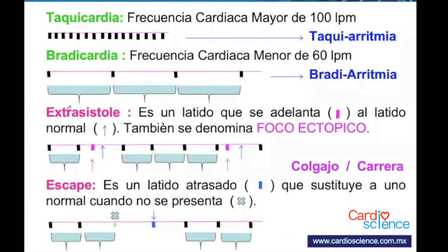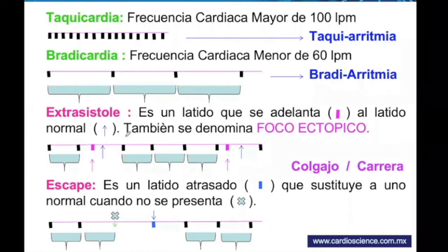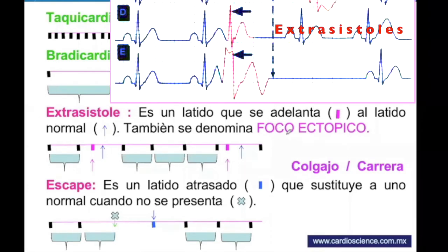Este latido se llama extrasístole. Pueden presentarse varias extrasístoles: si son dos juntas se llaman duplas, si son cinco se llaman colgajos, si son más de diez se llama carrera de extrasístoles. Las extrasístoles pueden ser auriculares, nodales y ventriculares. Una extrasístole es un foco ectópico, un latido fuera del lugar que se adelanta.